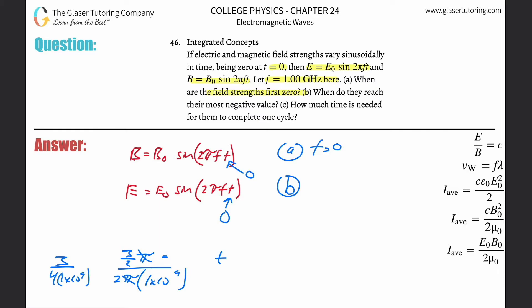So plug that into the calculator, three over four divided by one times 10 to the ninth. 7.5 times 10 to the minus 10. So that's the time now, 7.5 times 10 to the minus 10, that's the seconds.